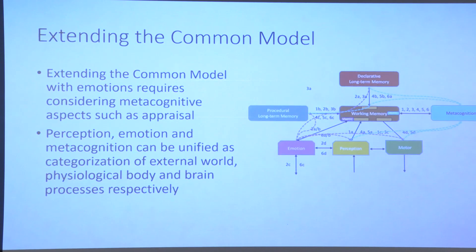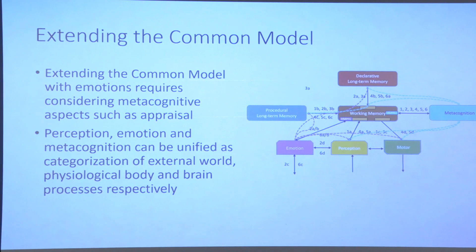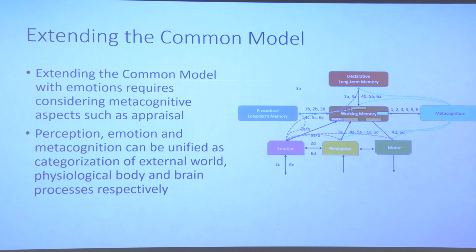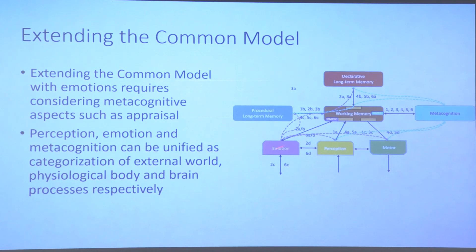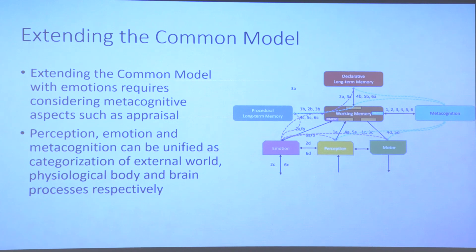We've talked about extending the common model to new capabilities, starting with emotions—a part of cognitive science often not integrated in cognitive architectures. In adding a module for emotions, we realized that some aspects of human behavior accounted as emotions, such as appraisal theory, really had a metacognitive flavor. That's why we felt the need to add a metacognitive module to balance the emotion module, and there is a potentially interesting unification on the architecture between perception, emotion, and metacognition.